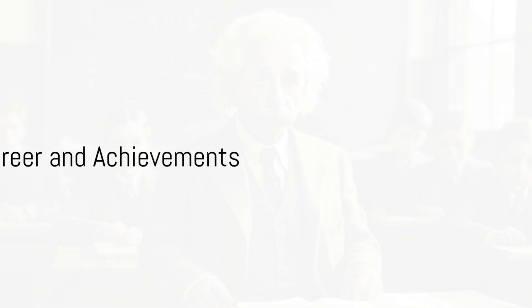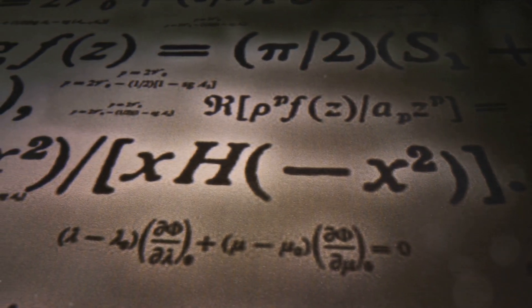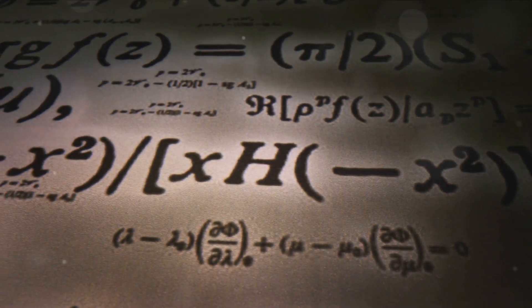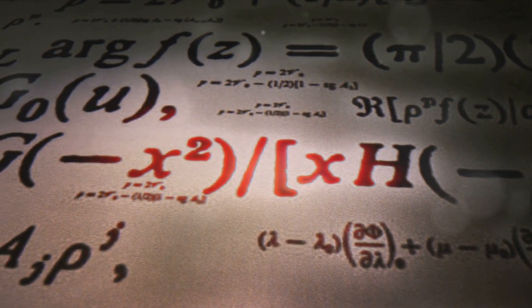Einstein's career took off when he published four revolutionary papers in 1905, known as the Annus Mirabilis papers. These papers, published in the prestigious Annalen der Physik, shook the very foundations of physics, propelling a young Einstein into the limelight.